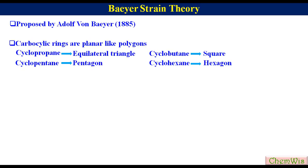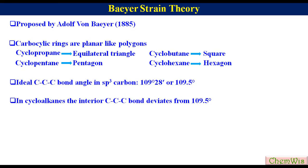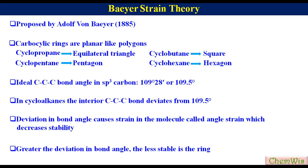In cycloalkanes, the ring carbon is sp3 hybridized. The ideal bond angle of an sp3 hybrid carbon is 109 degrees 28 minutes, or simply 109.5 degrees. In cycloalkanes, the interior CCC bond angle deviates from the ideal bond angle of 109.5 degrees. This deviation in the bond angle causes strain in the molecule called angle strain, which decreases stability and increases reactivity. The amount of deviation is the measure of strain of the ring — the greater the strain, the less stable is the ring.